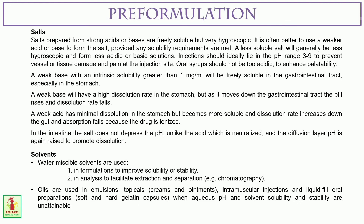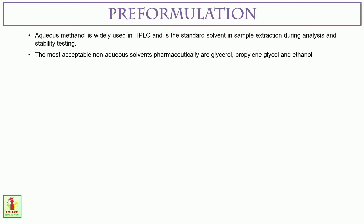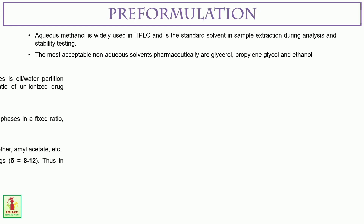Now, solvents. Water-miscible solvents are used in pre-formulation studies, in formulations to improve solubility or stability, and in analysis to facilitate extraction and separation — for example, in chromatography. Oils are used in emulsions, topicals such as creams and ointments, intramuscular injections, and liquid-filled oral preparations such as soft and hard gelatin capsules — when aqueous pH and solvent solubility and stability are unattainable. Aqueous methanol is widely used in HPLC and is the standard solvent in sample extraction during analysis and stability testing. The most acceptable non-aqueous solvents pharmaceutically are glycerol, propylene glycol, and ethanol.